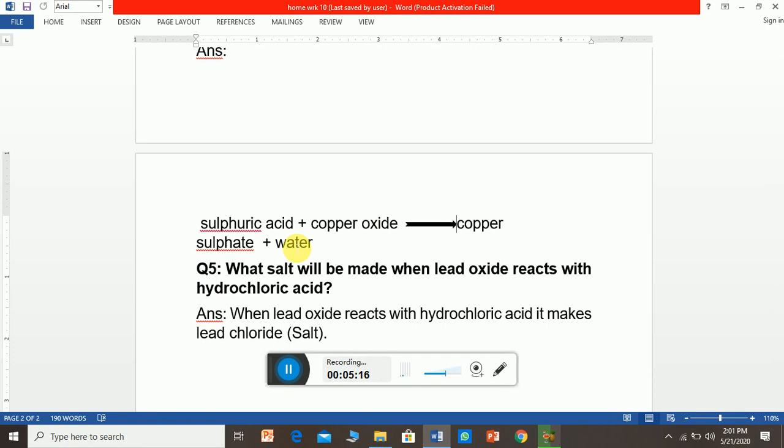Now the last question: What salt will be made when lead oxide reacts with hydrochloric acid? This is very important. Whenever hydrochloric acid is there, it means chlorine is there, HCl. Here we have lead oxide where lead is metal and O is oxygen. When lead oxide reacts with hydrochloric acid, it makes a salt which is lead chloride.